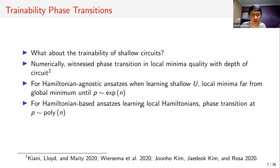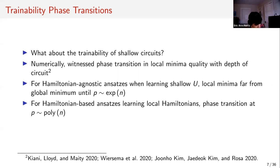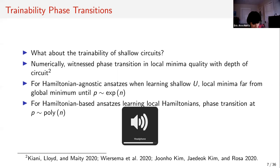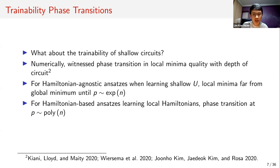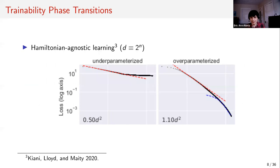A question was raised about what 'far away' means — it refers to far in terms of energy, not distance in parameter space. An illustrative example is the Keani, Lloyd, and Métis paper, which looks at optimizing Hamiltonian-agnostic VQE.